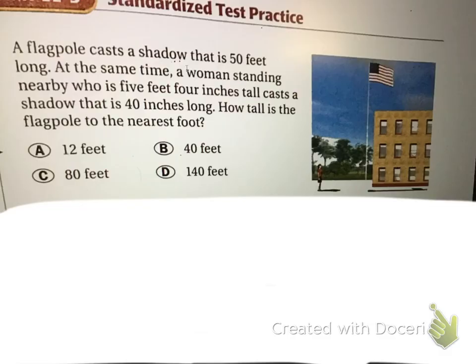Okay, last but not least, we have a word problem. The flagpole casts a shadow that is 50 feet long. At the same time, a woman standing nearby who is five feet four inches tall casts a shadow that is 40 inches long. How tall is the flagpole to the nearest foot? Okay, that was a lot of information. Let's slow it down. Here's our picture.